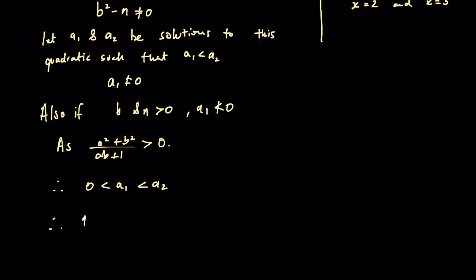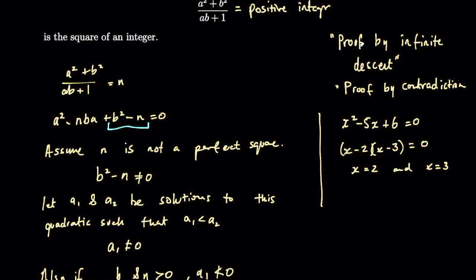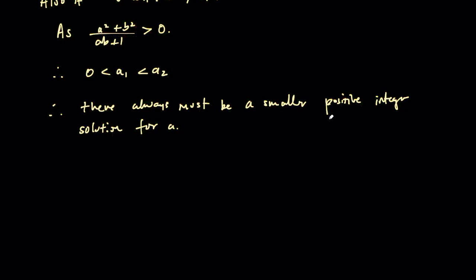Therefore, there always must be a smaller positive integer solution for a. This is the idea of proof by infinite descent as I talked about. We can eventually get a smallest positive integer. This is a contradiction. We eventually must have a1 being either 0 or less than 0. So we can say this is a contradiction.